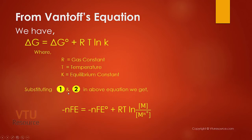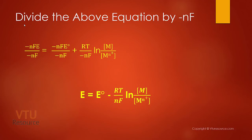Substituting equation 1 and equation 2 into this equation, we get: minus N F E equals minus N F E0 plus RT ln (concentration of M by concentration of M(n+)). Since the Nernst equation gives the relationship between electrode potential E and the concentration of the species, the entire equation is divided by minus N F. Then the equation reduces to: E equals E0 minus (RT / NF) ln (concentration of M by concentration of M(n+)).